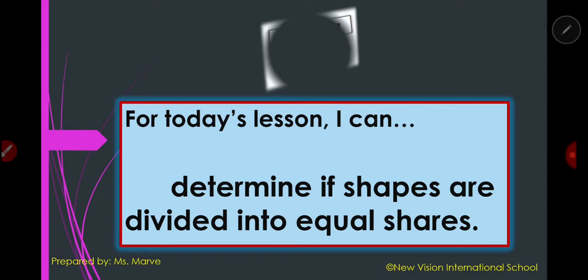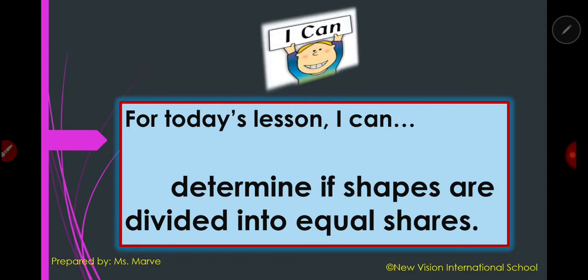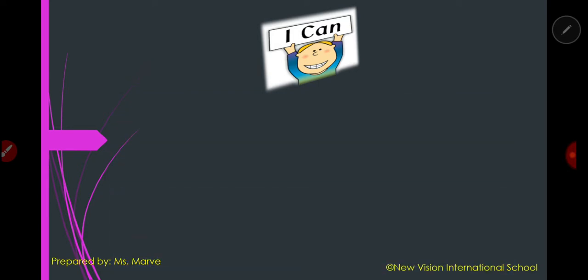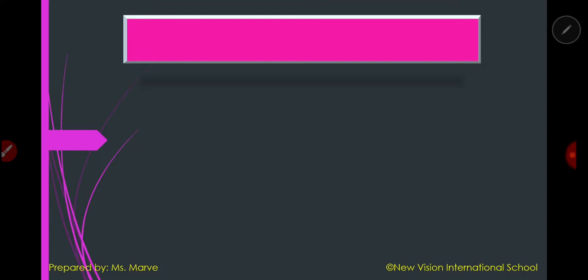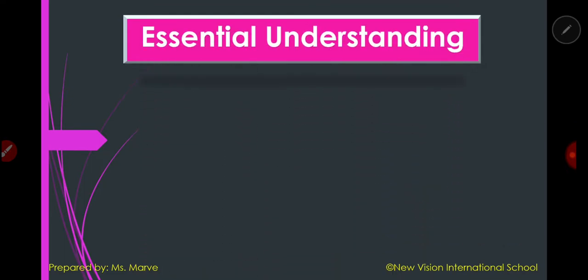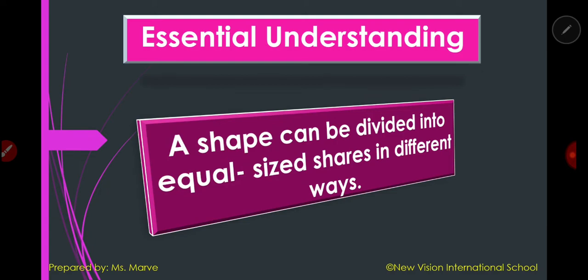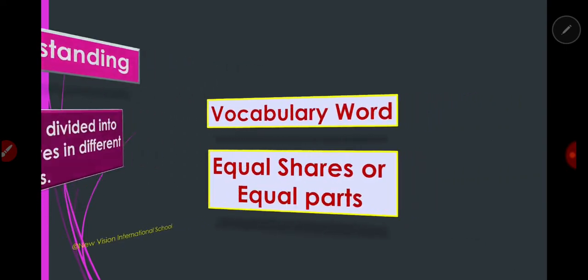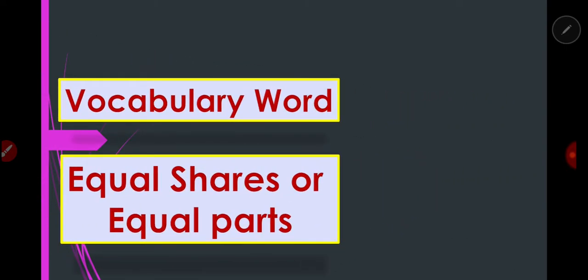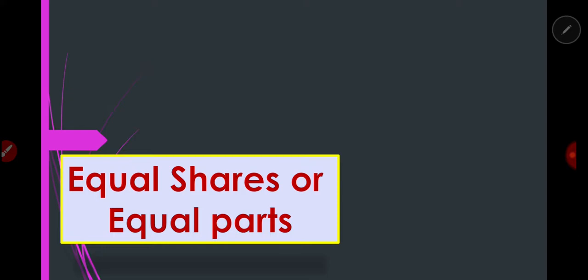Our objective for today's lesson: I can determine if shapes are divided into equal shares. Let's read the essential understanding together: a shape can be divided into equal size shares in different ways. Can you still remember our vocabulary words? Everybody say 'equal shares' — very good! Or 'equal parts.'